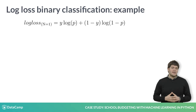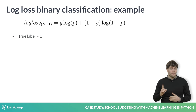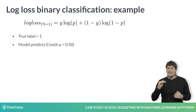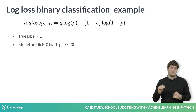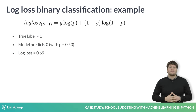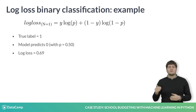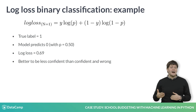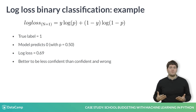Now consider the case that the correct label is 1, but our model is not sure, and our prediction is right in the middle at a value of 0.5. Our log loss is 0.69. Since we are trying to minimize log loss, we can see that it is better to be less confident than it is to be confident and wrong.